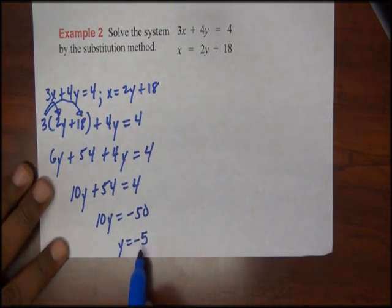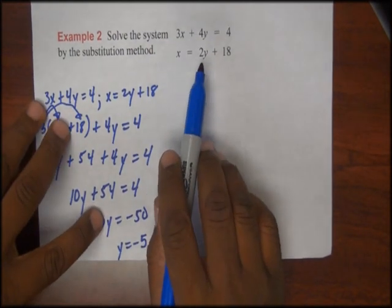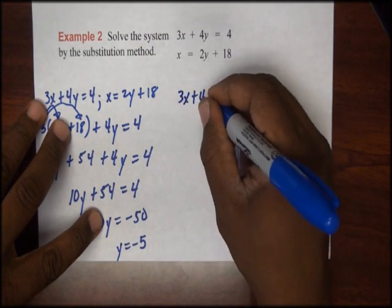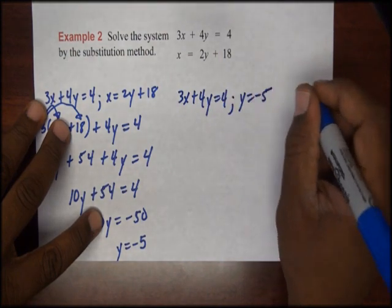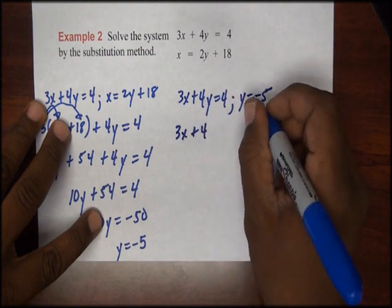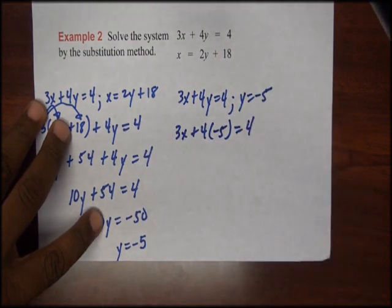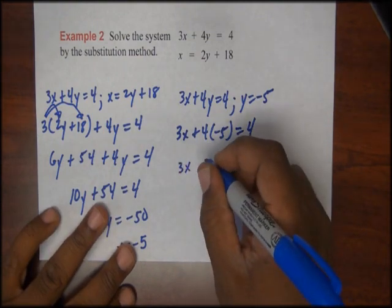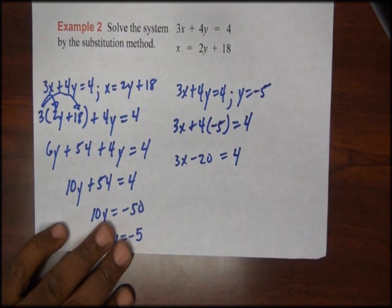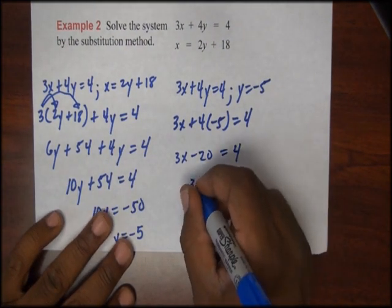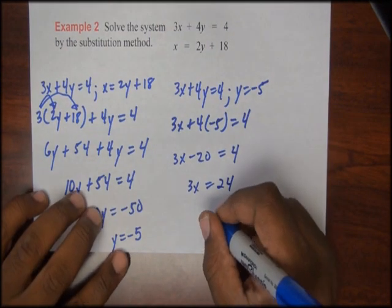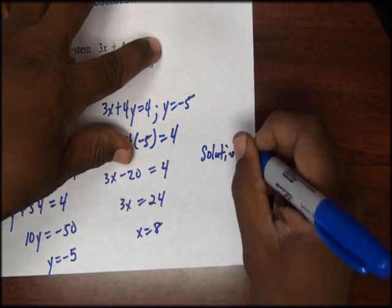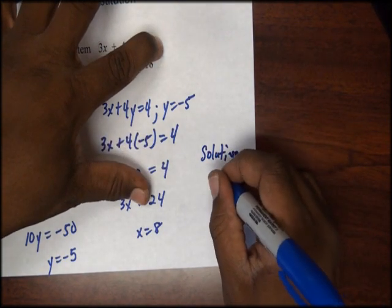To get our next result, I'll take y equals negative 5 and substitute it into one of the original equations. I'll choose the first equation: 3x plus 4y is equal to 4. Substituting y for negative 5, we have 3x plus 4 times negative 5 is equal to 4. Simplifying, we have 3x minus 20 is equal to 4. Adding 20 to both sides, then dividing by 3, we get x is equal to 8. So our ordered pair solution is 8 and negative 5.